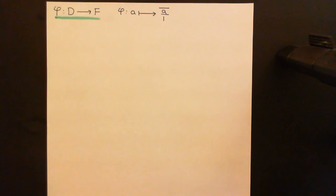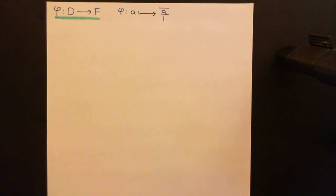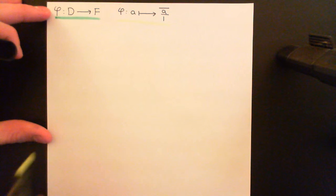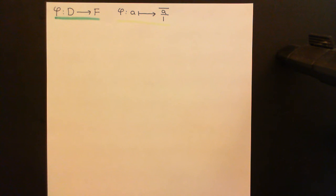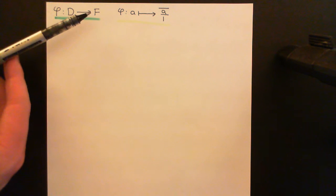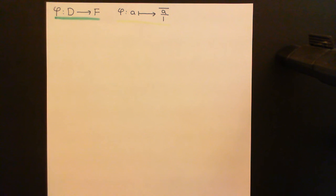So we're going to map any element of the integral domain onto this equivalence class of fractions in the fraction field. That's specifically how φ is going to work. My job now is to show that this is an injective ring homomorphism, and therefore that we truly do have an isomorphism from the integral domain onto a subring of the fraction field. Therefore we can think of the fraction field as an extension of the initial integral domain to turn it into a field.